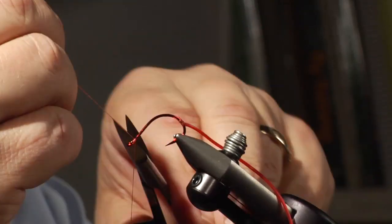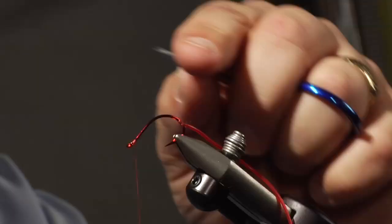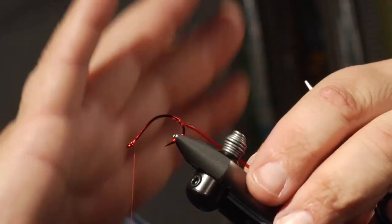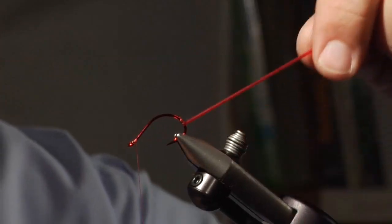Throw another half hitch in there. I like to use this red hook because I like to use the sheen, the natural sheen that it comes off of the hook there.